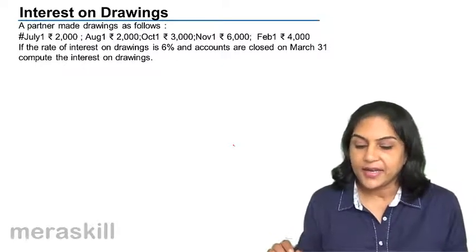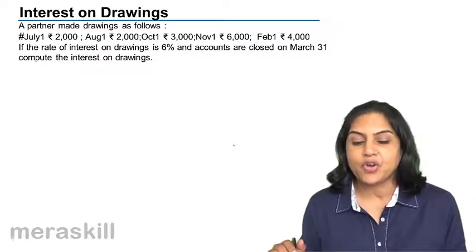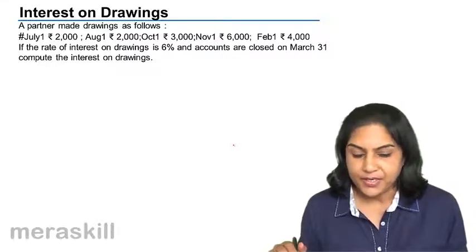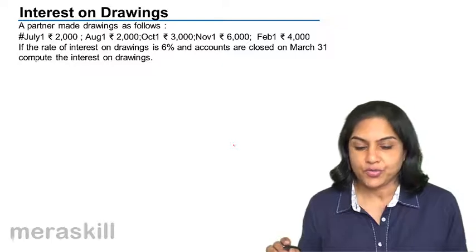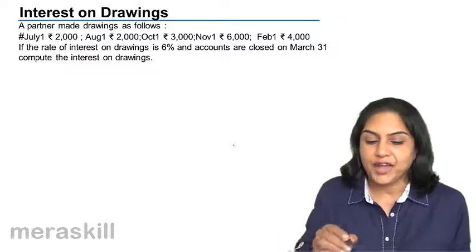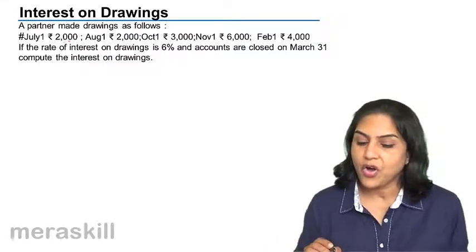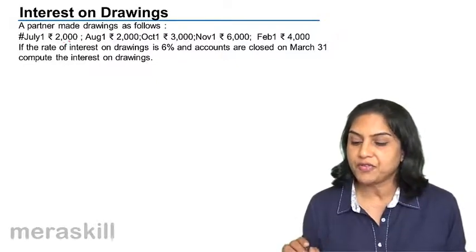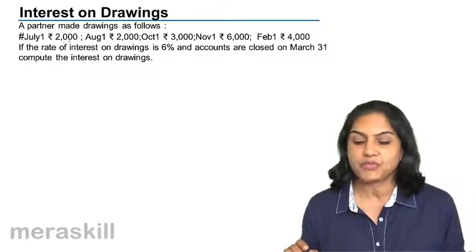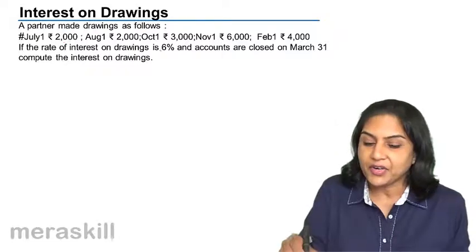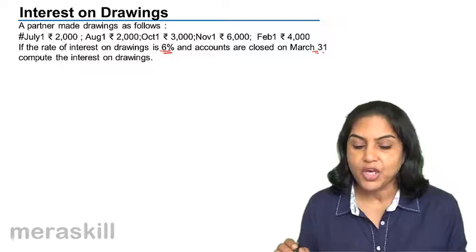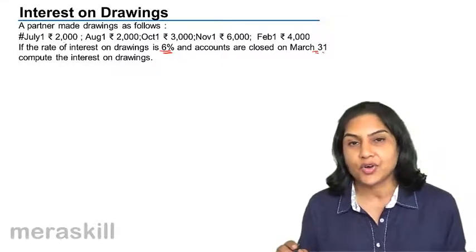Let us understand interest on drawings. Suppose a partner makes drawings as follows: on July 1st, 2000; on August 1st, 2000; October 1st, 3000; November 1st, 6000; and February 1st, 4000. The rate of interest is 6%. Accounts are closed on 31st March. What is the interest on drawings?